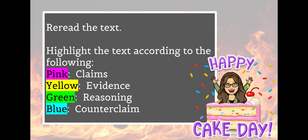Now you are going to re-read the text with your partner and highlight the text according to the following: highlight the claims that Reynolds Price makes in pink, his evidence in yellow, his reasoning in green, and his counterclaim in blue. Remember that the counterclaim is the opposing viewpoint to the claims the author makes. You will have 5 minutes to complete this activity.